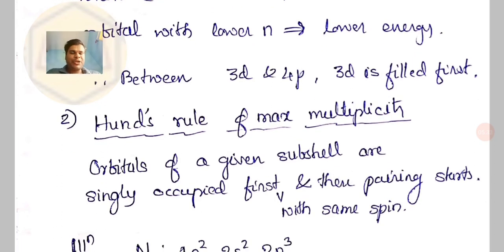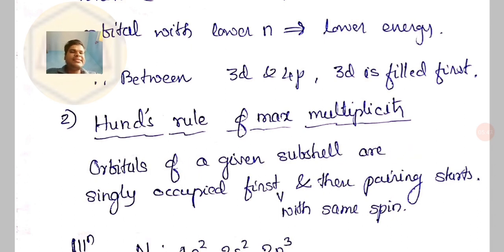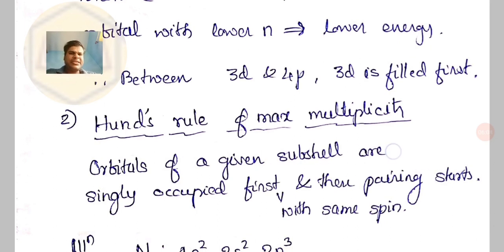Now let us come to the second principle, known as Hund's rule of maximum multiplicity. Simply stated: orbitals of a given subshell are singly occupied first. When singly occupied, each electron has the same spin — say plus half for every electron. Then pairing starts. This is simply what Hund's rule of maximum multiplicity is.